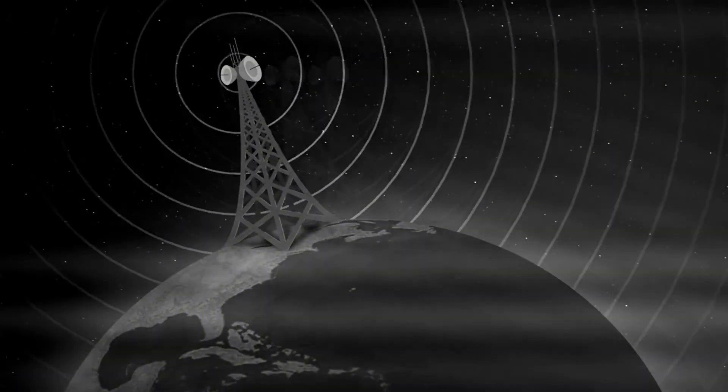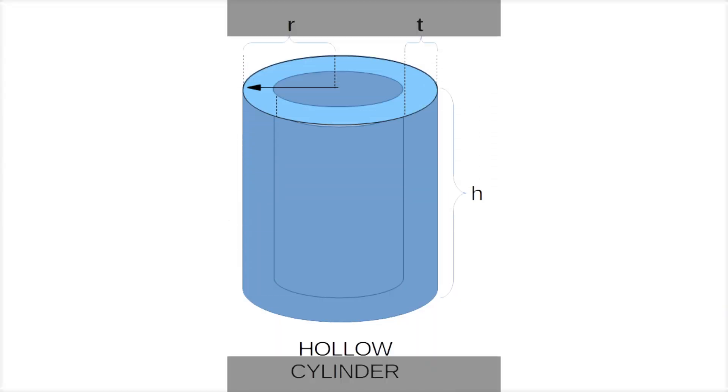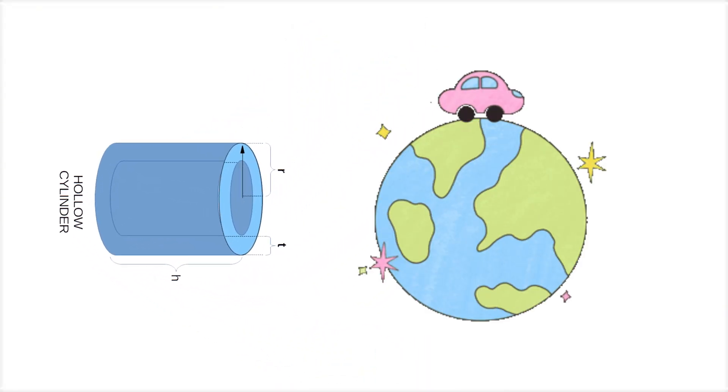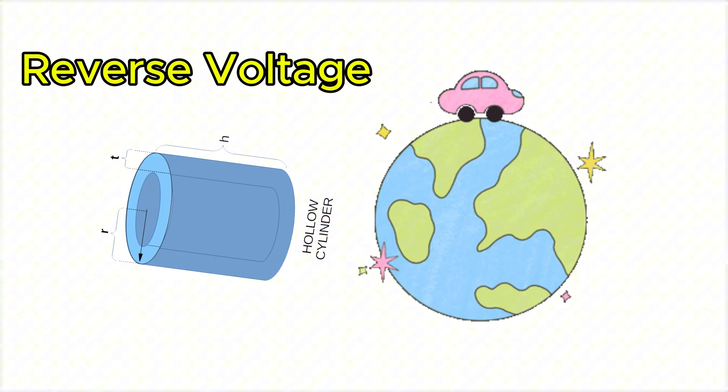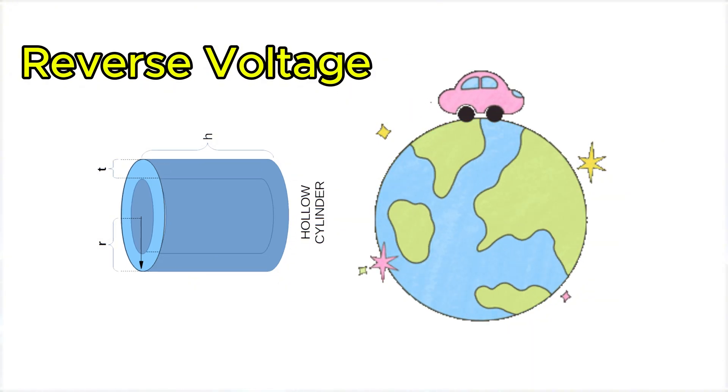The output varied exactly as expected when the cylinder's orientation was changed. It dropped to zero when aligned parallel to the rotation axis, reversed sign when rotated 180 degrees, and peaked when perpendicular.